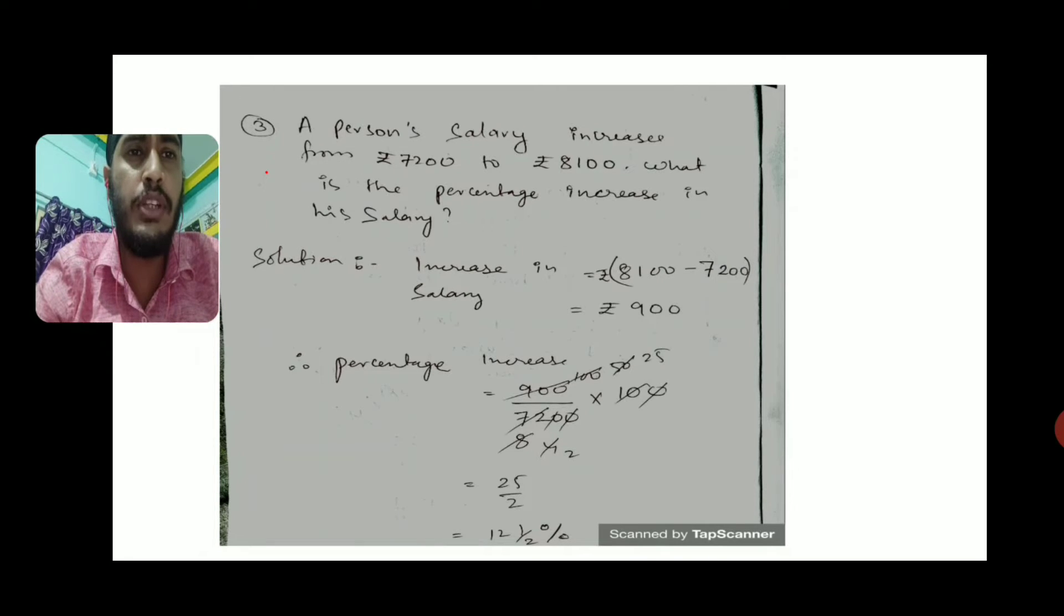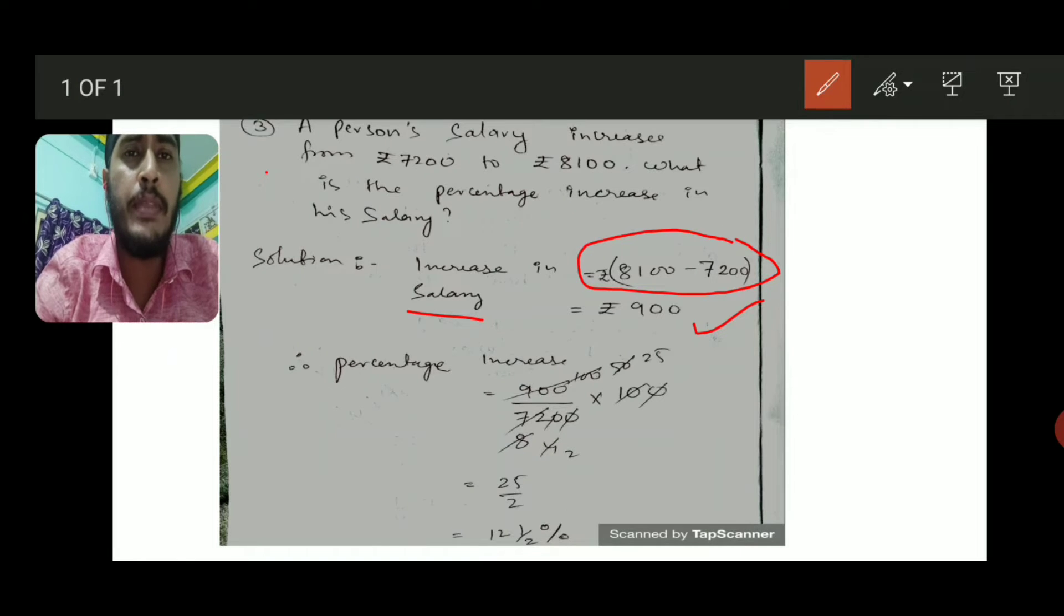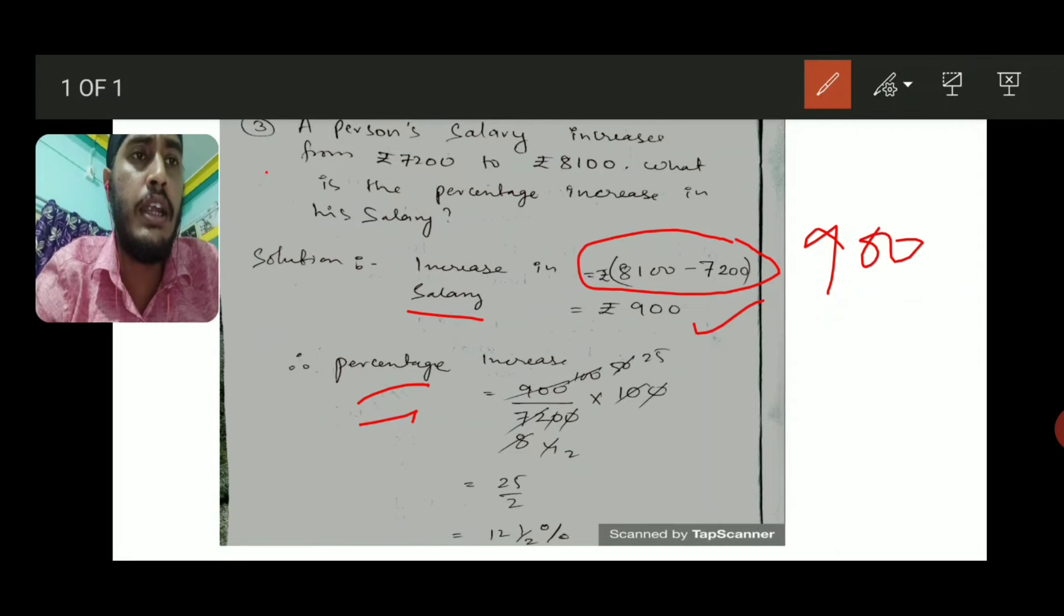To find the percentage increase in his salary, first we need to find how much the salary is increased. Increase in salary equals rupees 8100 minus 7200, you will get 900 by subtraction. Now the percentage increase in the salary will be 900 divided by 7200 multiplied by 100.